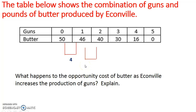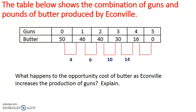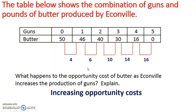When you go from one unit of guns to two, you're losing six pounds of butter. When you go from two to three guns, you're losing ten pounds of butter. Going from three to four guns, you're losing fourteen pounds of butter. And finally, when you go from four to five guns, you are giving up sixteen pounds of butter. We can see that our opportunity cost is rising with each additional gun, and so therefore we would use the phrase increasing opportunity costs.